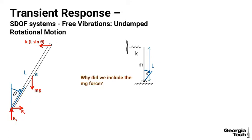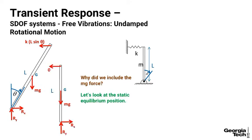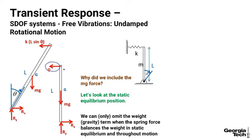Why did we include the weight term? What you want to do to figure that out is look at the static equilibrium position. In the static equilibrium position, none of the force in the spring is holding the weight. You can only omit that weight term when the spring force balances the weight in static equilibrium and throughout motion. And you can see that it doesn't balance in static equilibrium in this case.